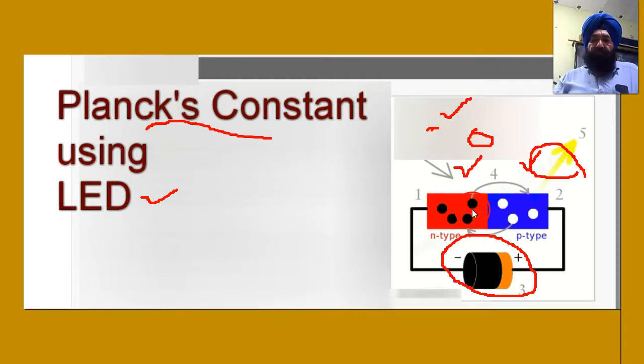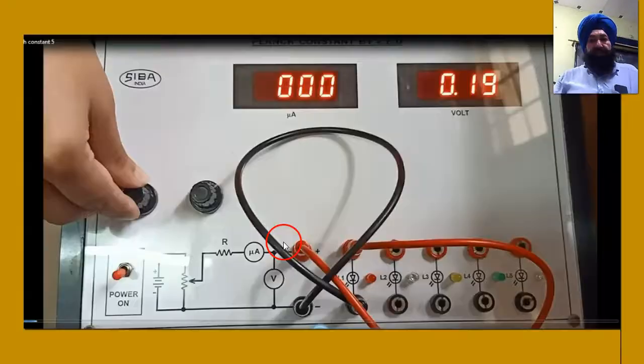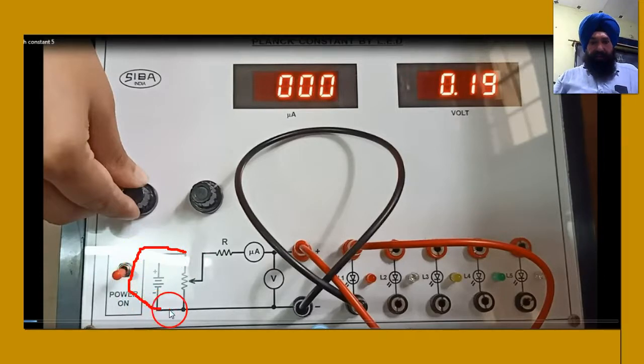This is a circuit. Here we are having a variable voltage which will be applied to light emitting diode.